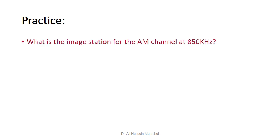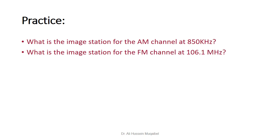To test understanding, consider two questions. First: what is the image station for the AM channel at 850 kHz? Add 2×FIF = 2×455 = 910 kHz to 850 kHz to get 1760 kHz. Second: what is the image station for the FM channel at 106.1 MHz? Here you add 2×10.7 MHz (the FM intermediate frequency) to 106.1 MHz — not 2×455 kHz, because FM uses a different intermediate frequency. Thank you for listening.